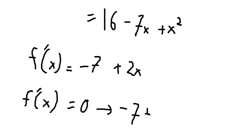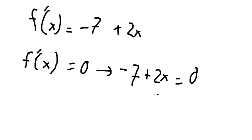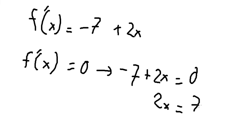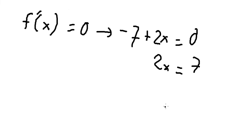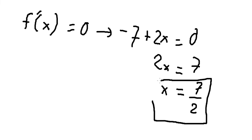We set the first derivative equal to zero. So 2S minus 7 equals zero. We put negative 7 on the right side, then divide both sides by 2. Therefore S equals 7 over 2, which is the location of the critical point.